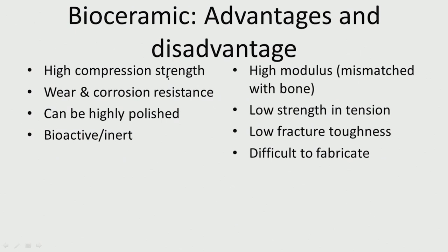Now of course it has some disadvantages. High modulus — so mismatched with the bone. The modulus has to match with the bone, otherwise you end up having stress shielding. That is why nowadays titanium-based alloys are coming where the modulus is coming closer and closer to the bone. Low strength in tension — it just cannot take tension, it will just snap. Low fracture toughness means if there is a crack it propagates very fast and the material will break, whereas a metal with very high fracture toughness will still survive for a very long time.